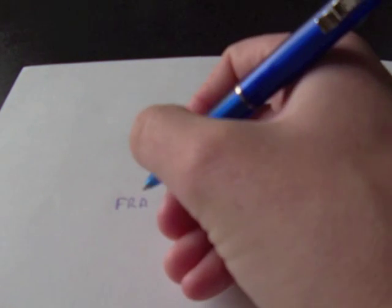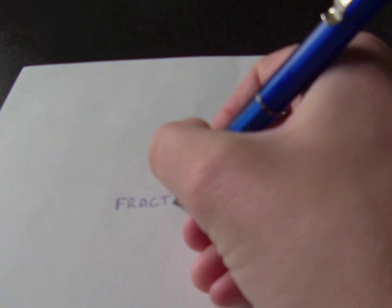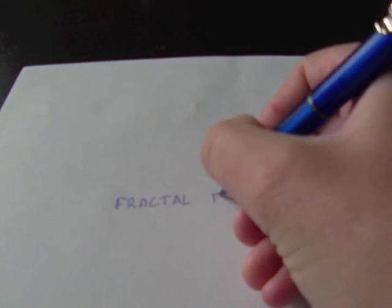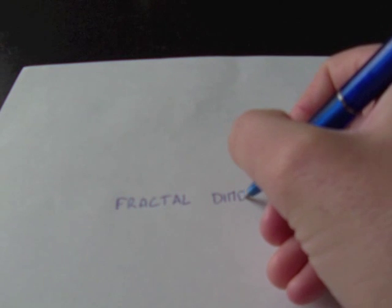To strictly describe a fractal, we must observe its dimension. Different kinds of dimensions exist. The Euclidean one, the topological one, and the fractal dimension.